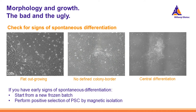If the cells are cultured under suboptimal conditions, exposed to environmental stress, or if the line is not of good quality, PSCs may undergo unwanted spontaneous differentiation. The most common signs of alteration in PSC morphology include flat outgrowths of large cells, colonies with poorly defined borders, and central differentiation with loss of monolayer growth.